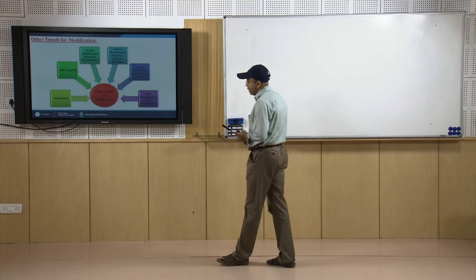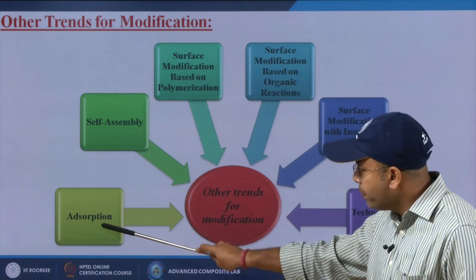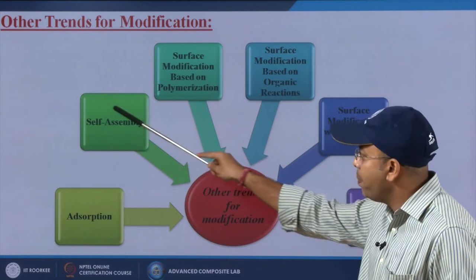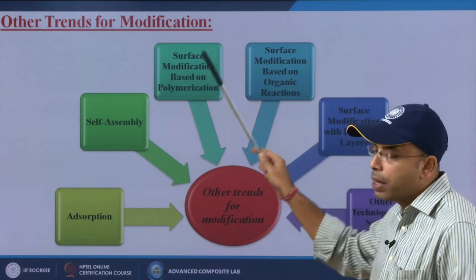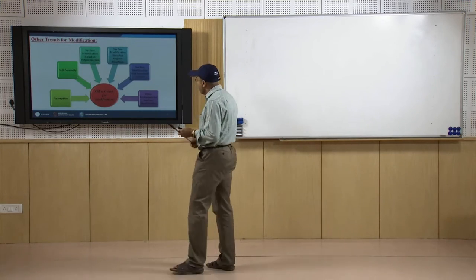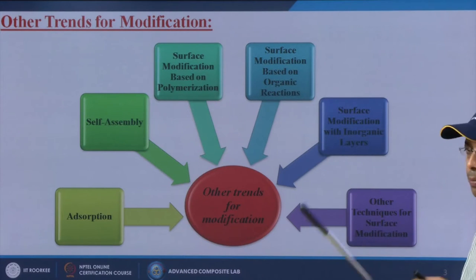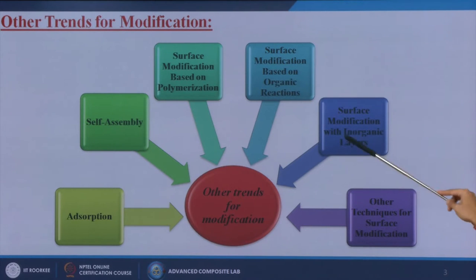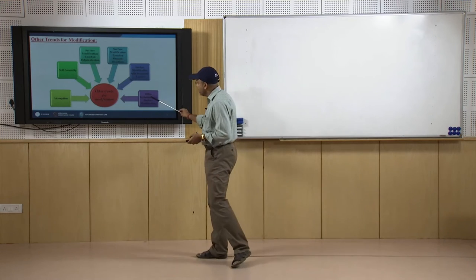What are the other trends? When we are talking about the other trends, it is divided or subdivided into several parts. First one is called adsorption — by adsorption technology, how we are going to modify our surface or nanoparticles. Second one is called self-assembly. Third is surface modification based on polymerization. Fourth is surface modification based on organic reactions. Fifth is surface modification with inorganic layers. And then other techniques for surface modification, covering residual applications or functionalization processes.